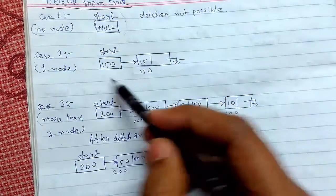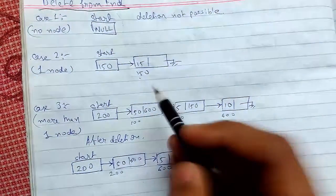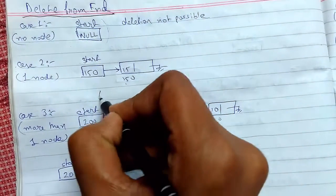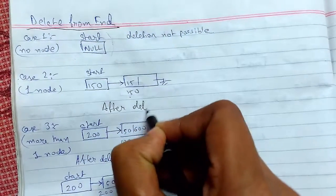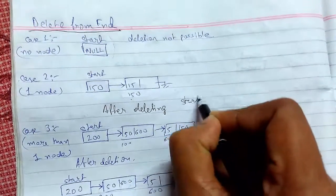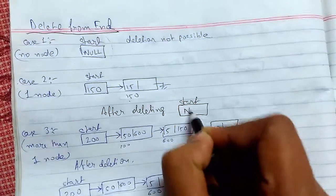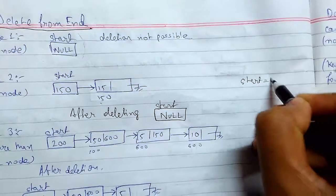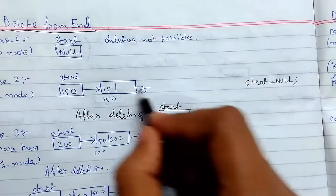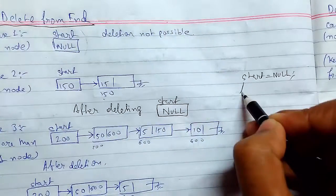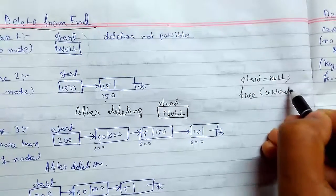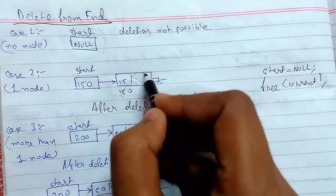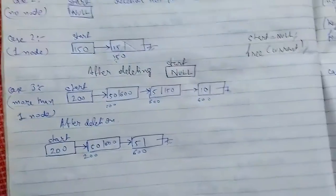The second case is when there is only one node present in the list. After deleting, the list will look empty. To do this, we need to set start to null and free the current node — this will get removed and the pointer becomes null. The deletion has been done.